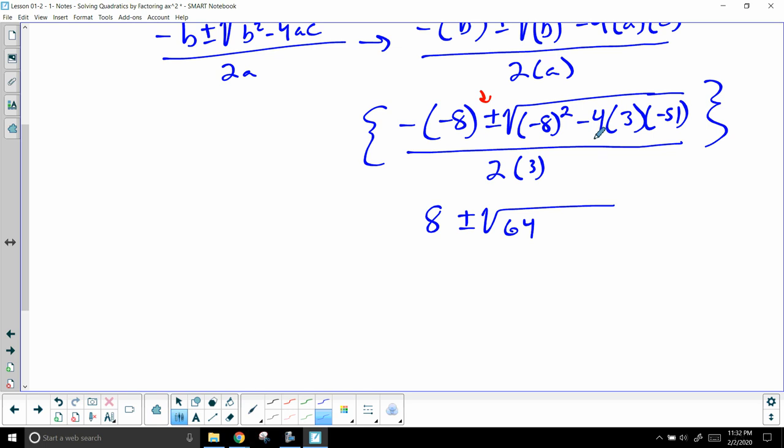4 times 3 is 12, and now I need my calculator for this. 12 times 51... I know the two negatives make a positive so I know it's positive 612 all over 2 times 3 which is 6. So 612 plus 64 is 676. So 8 plus minus 676 all over 6.